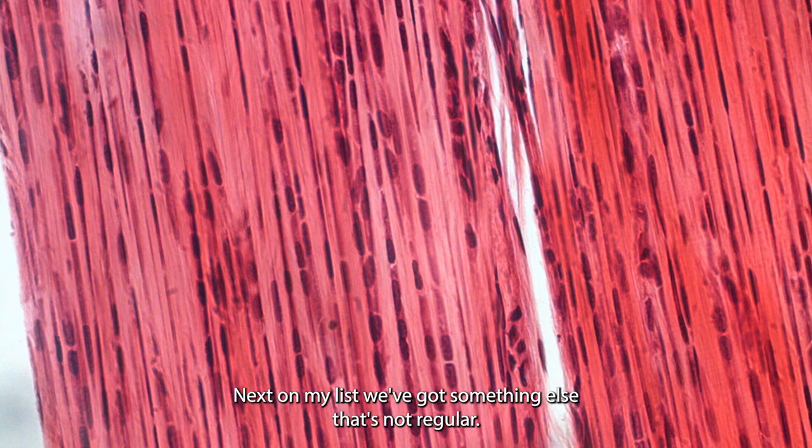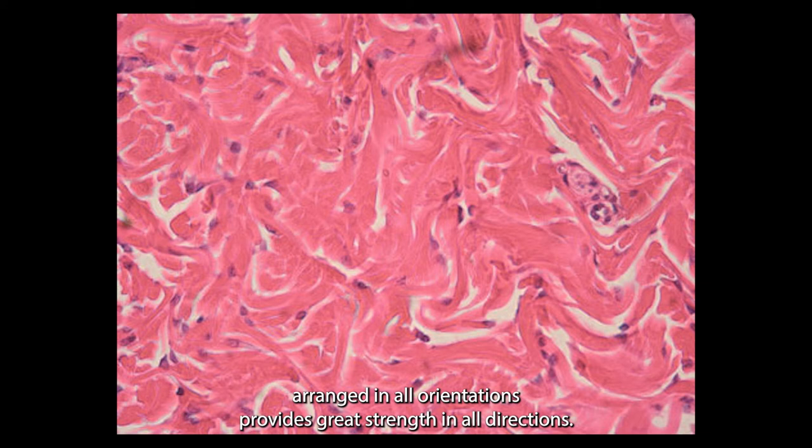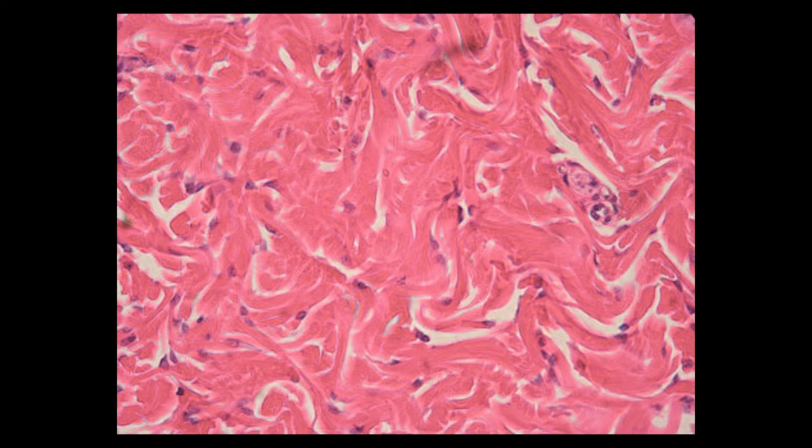Next on my list we got something else that's not regular: dense irregular with collagen arranging all orientations. It provides great strength in all directions. A few elastic fibers there are present. The cell type is fibroblasts.